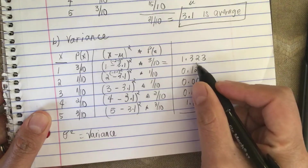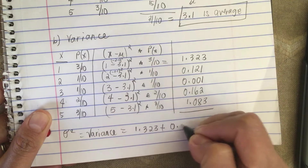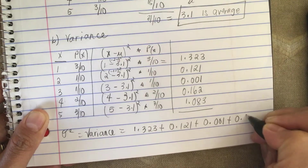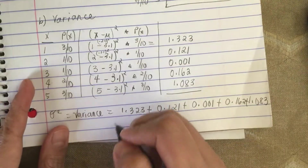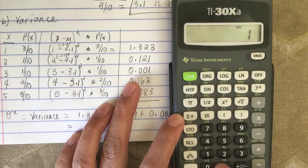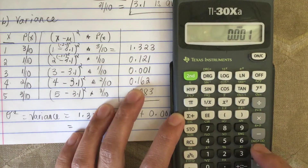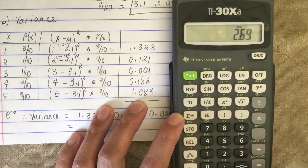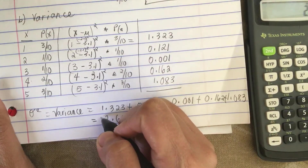So the variance is the sum of all these values: 1.323 plus 0.121 plus 0.001 plus 0.162 plus 1.083 equals 2.69. So this is the variance.